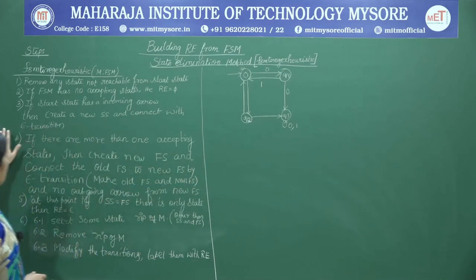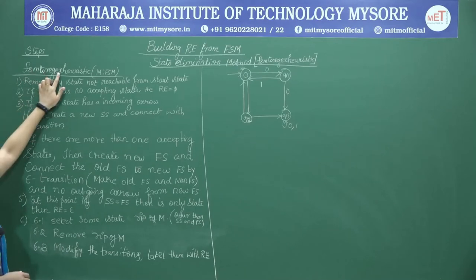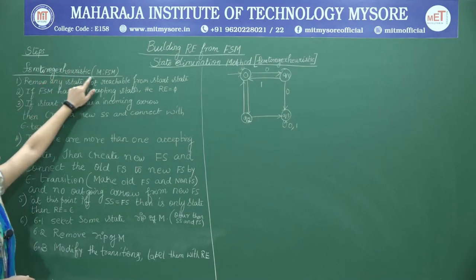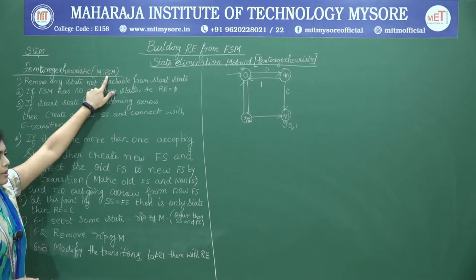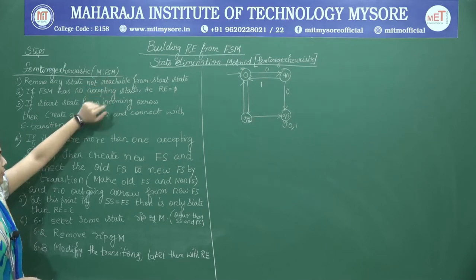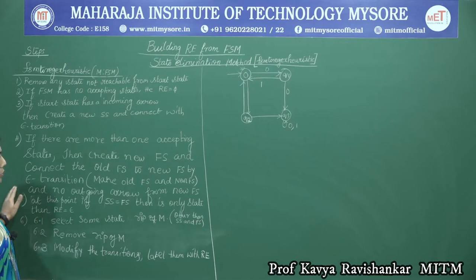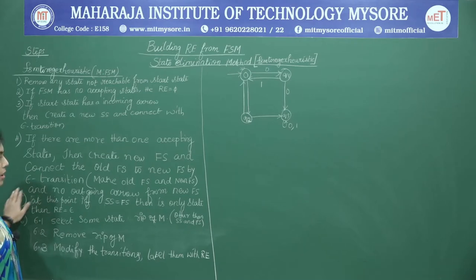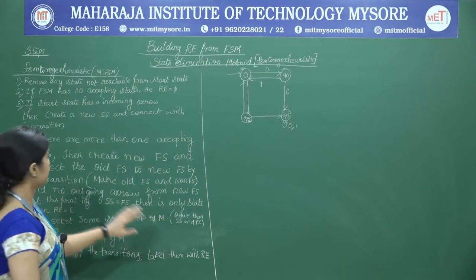We have an algorithm called FSM to regular expression heuristic, where M is represented by the FSM. We will see the different steps and follow them in order to make the conversion.